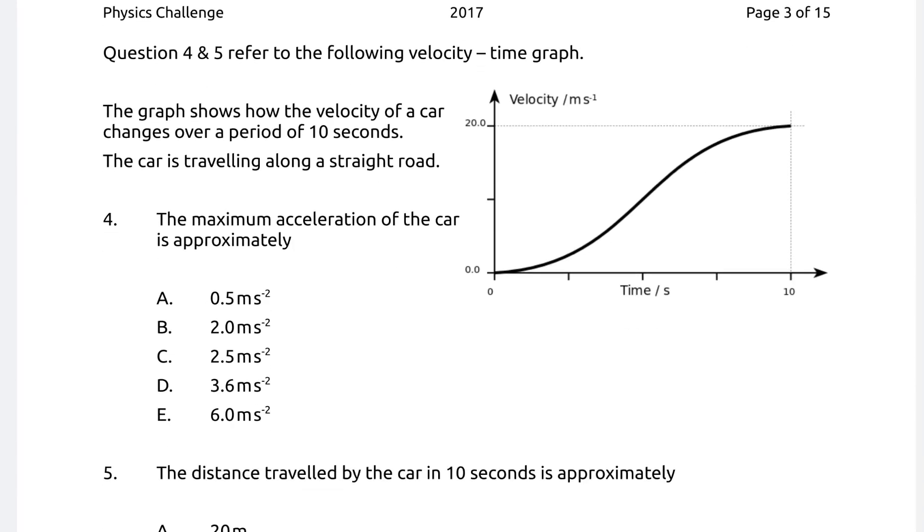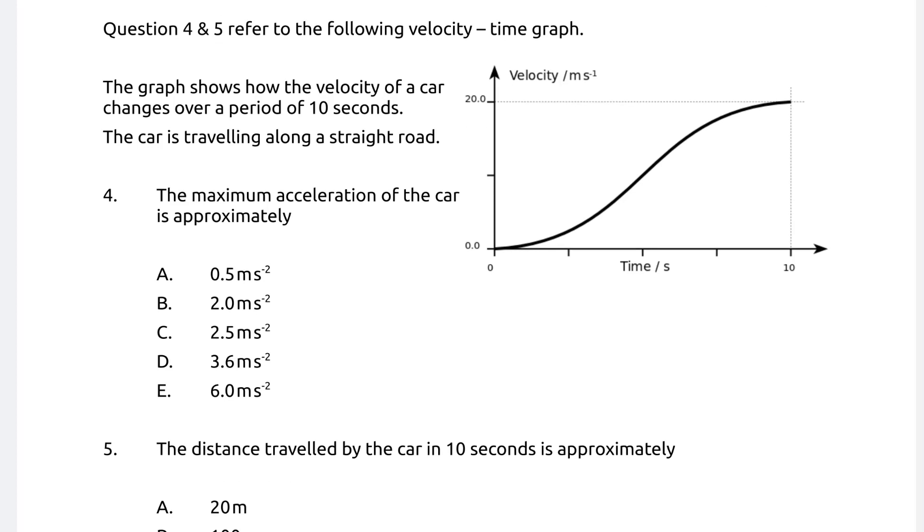Questions 4 and 5 refer to the following velocity time graph. The graph shows how the velocity of a car changes over a period of 10 seconds. The car is traveling along a straight road. The maximum acceleration of the car is approximately equal to what? The maximum acceleration will occur at the steepest portion of the graph. So what we really need to do is draw a tangent at the steepest part. If you're going up this by bike, the steepest part will be along here. This is very difficult to draw without a digital ruler, but I'll just try and do my best. In the real example, please use a real ruler. And the velocity will just be the gradient of the tangent.